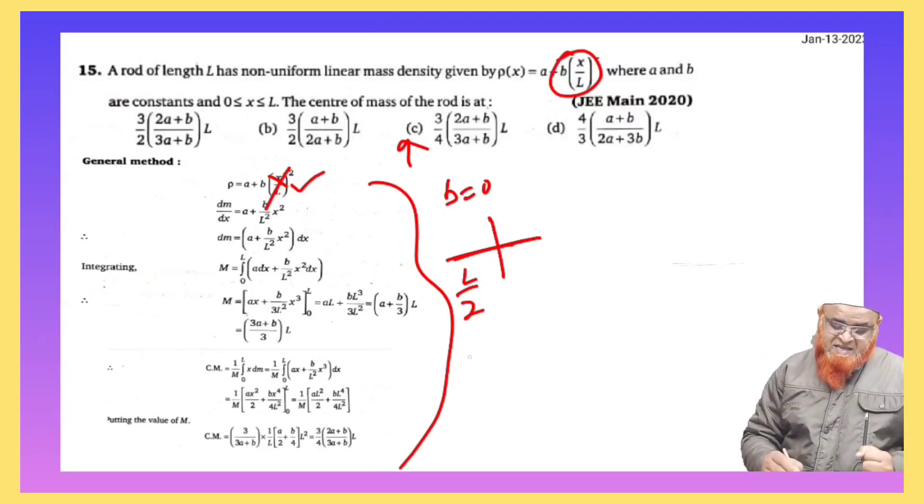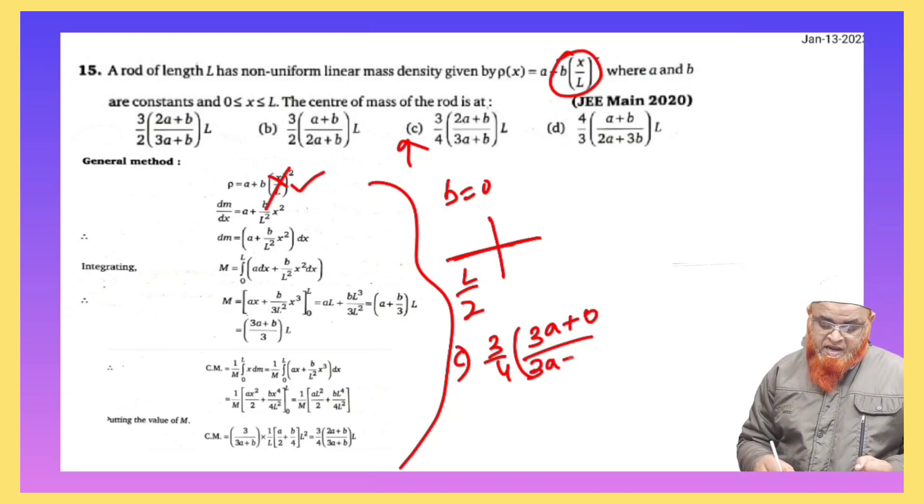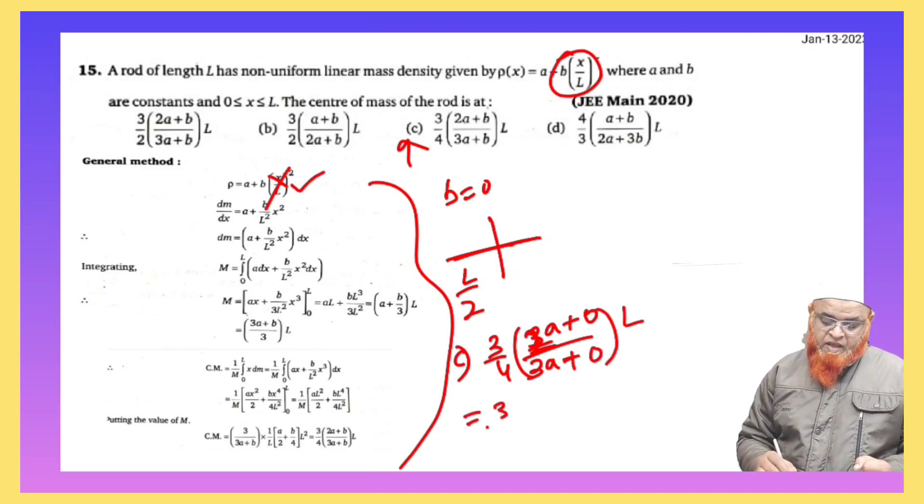Let us check and find it. Now if you see here, option C is 3 by 4. 3 into A plus B - B is considered to be 0. 2 into A plus B - B is 0. And 3 into A plus B - B is 0 again. Into L is left.